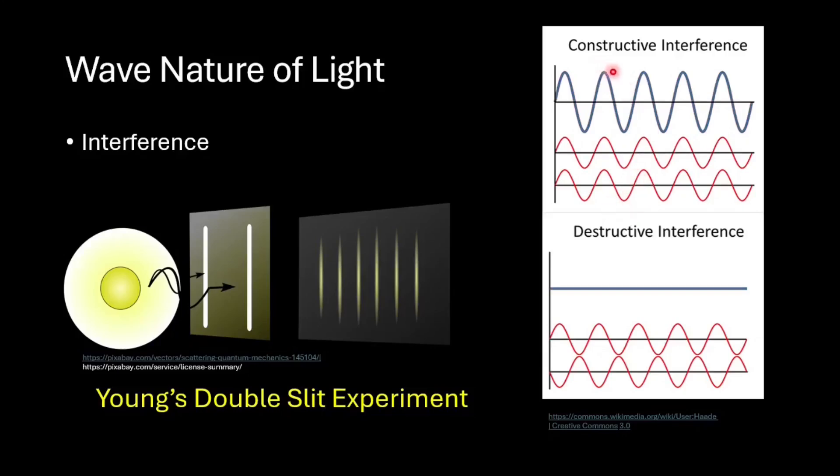This results in higher crests and deeper troughs. The dark bands were due to destructive interference, which is when the crest of a wave overlaps with the trough of another, effectively cancelling each other out. If wave nature were absent, only the bands directly aligned with the slits would appear and the rest of the screen would be dark.